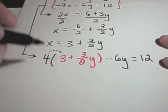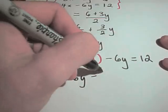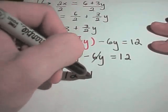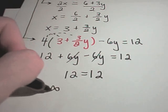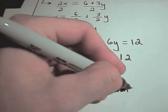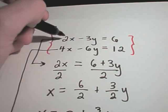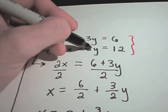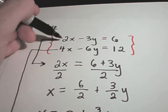If I distribute on the left side, I get 4 times 3 which is 12, plus 4 times 3/2 which gives a positive 6y, minus 6y equals 12. The 6y's cancel out and I get 12 equals 12. This is the case where the two equations represent the same line, so there are infinitely many solutions. Notice that if you multiply the first equation by 2 — multiplying 2x by 2 gives 4x, negative 3y by 2 gives negative 6y, and 6 by 2 gives 12 — you get the second equation exactly. So one equation is a multiple of the other.